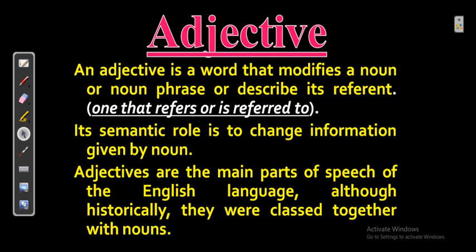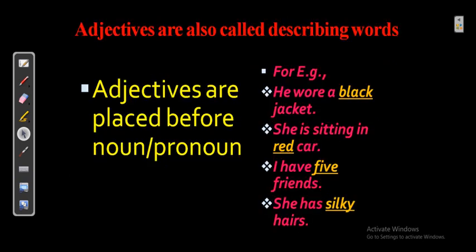For example: 'He is a boy' is a simple sentence. But 'He is a good boy' — here 'good' is giving quality to 'boy.' 'Boy' is the noun and 'good' is the adjective. Adjectives are also called describing words and are placed before a noun or pronoun. For example: 'We wore a black jacket' — 'black' describes the quality of the jacket.